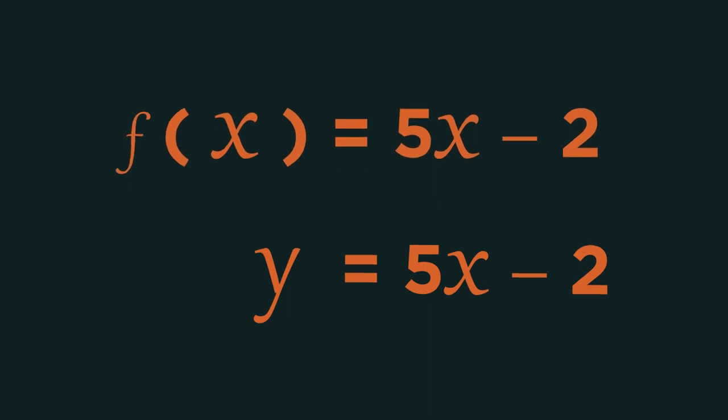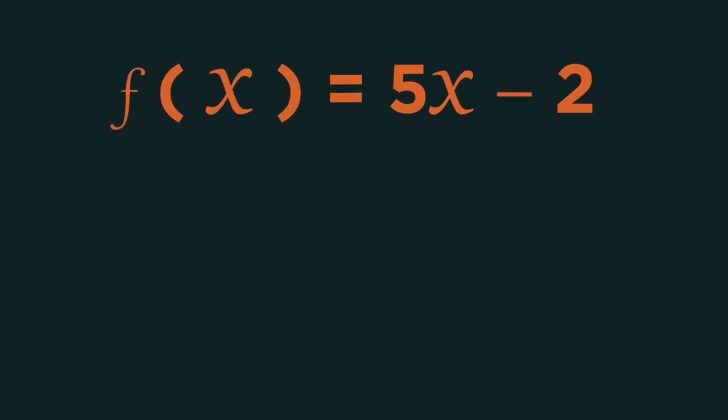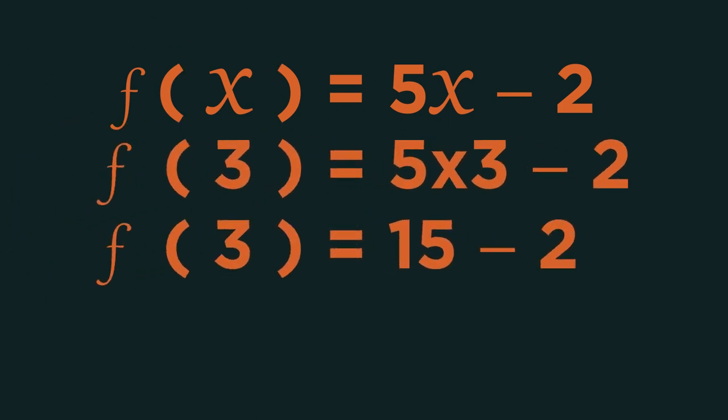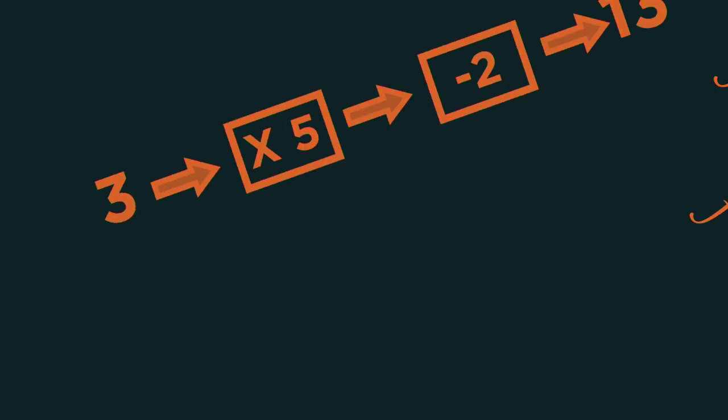If we wanted to calculate the value of f(3), we just need to replace the x in the function with 3, which we already knew from our input output machine earlier.